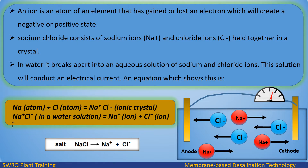The equation which shows this is: Na (atom) + Cl (atom) → NaCl (ionic crystal). NaCl in a water solution → Na⁺ (ion) + Cl⁻ (ion).